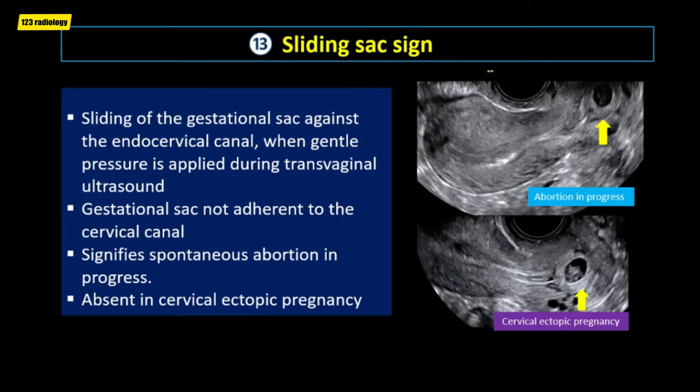The interstitial line sign is a useful diagnostic sign of interstitial ectopic pregnancy. It may be seen as an echogenic line between the endometrial cavity and the gestational sac, most likely representing the interstitial portion of the fallopian tube. The interstitial line sign has 80% sensitivity and 98% specificity for the diagnosis of interstitial ectopic pregnancy. However, these criteria are reproducible only in the first trimester, and the diagnosis becomes more difficult when the gestation enlarges in the second trimester.